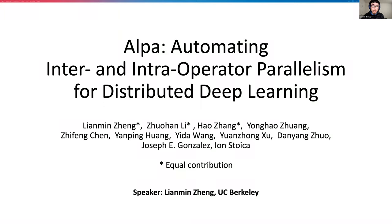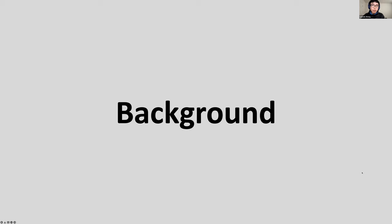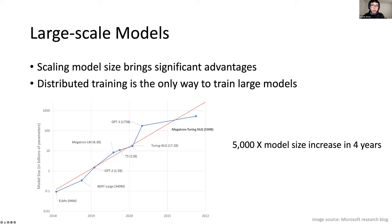To make the talk interactive, please feel free to interrupt me anytime. To begin with, let me introduce some background on large models and distributed training. Several recent advances in deep learning have been a direct result of a significant increase in model size. For example, scaling language models such as GPT-3 to hundreds of billions of parameters and training them on much larger datasets enabled fundamentally new capacities. It's no surprise that the number of parameters in state-of-the-art models has grown at an exponential rate.